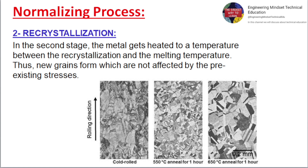Two: Recrystallization. In the second stage, the metal gets heated to a temperature between the recrystallization and the melting temperature. Thus, new grains form which are not affected by the pre-existing stresses.